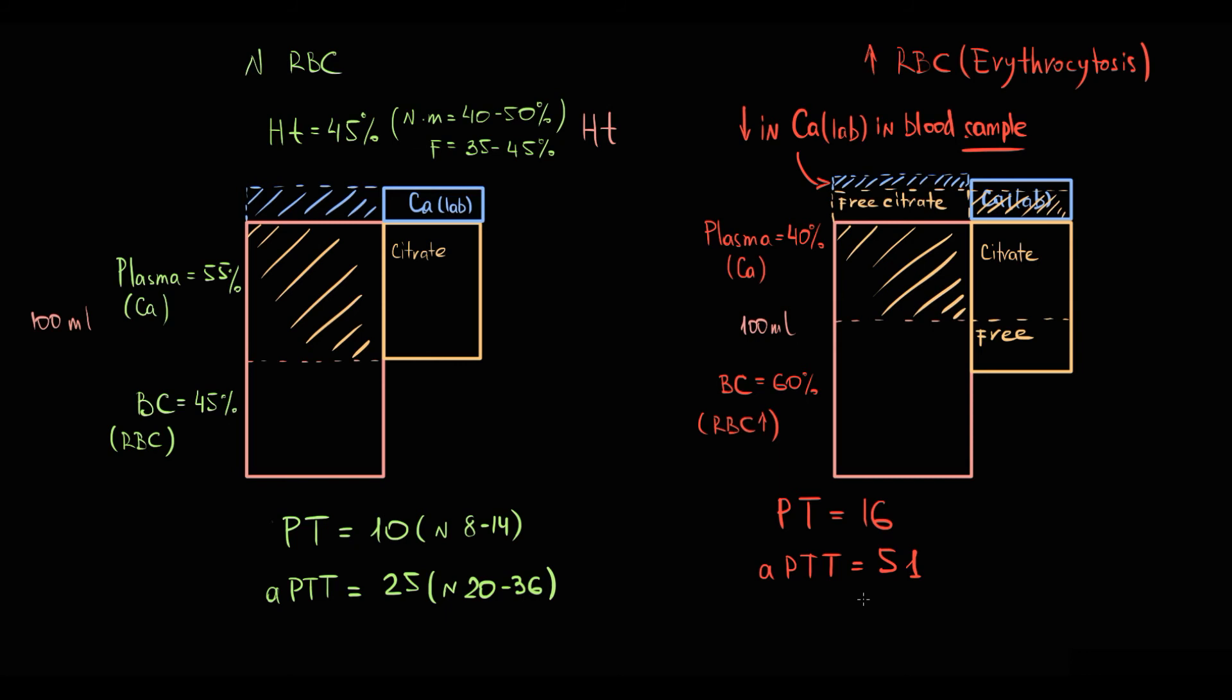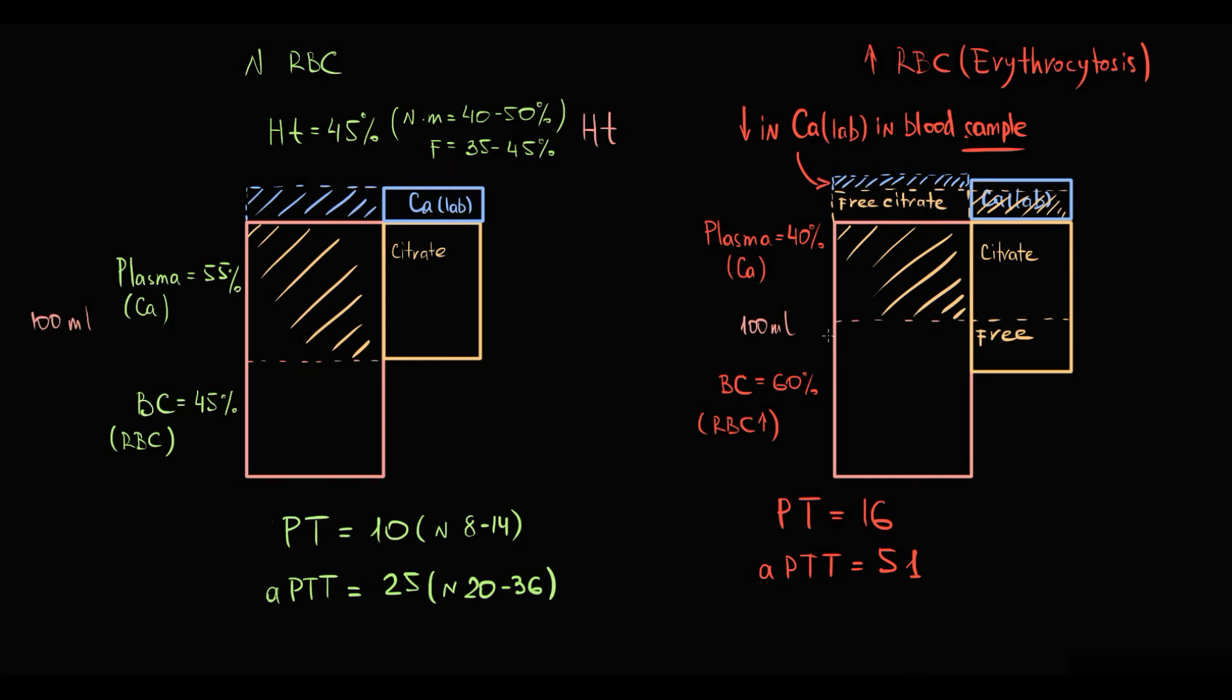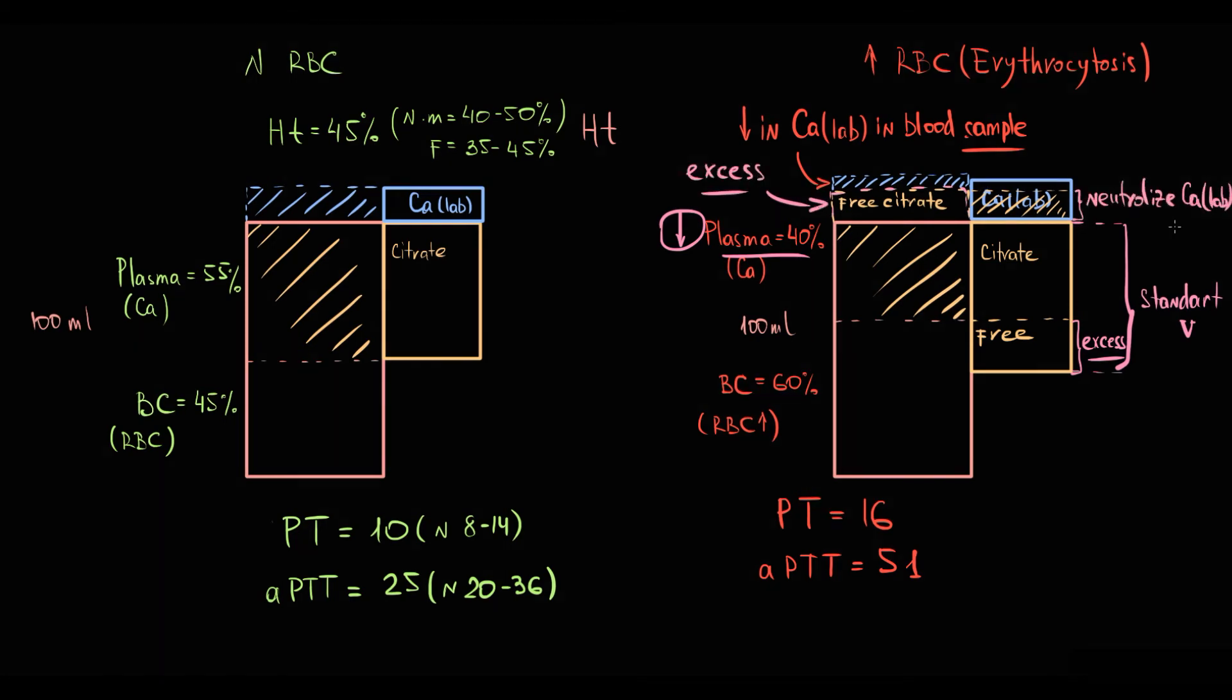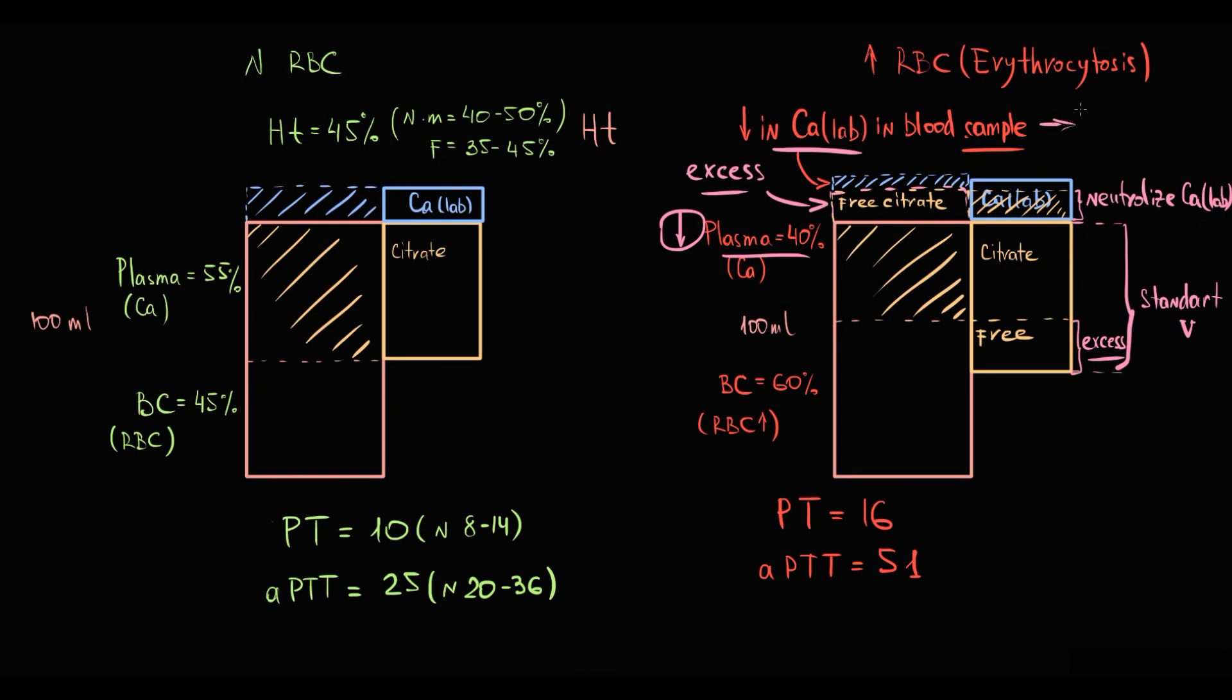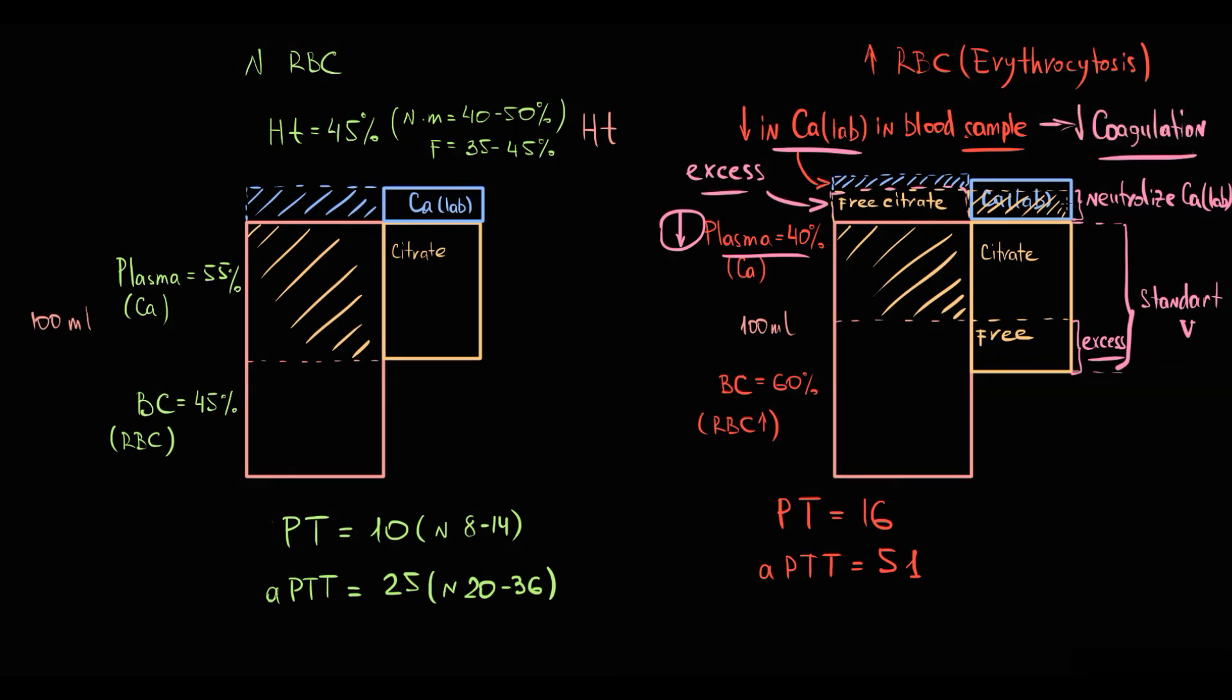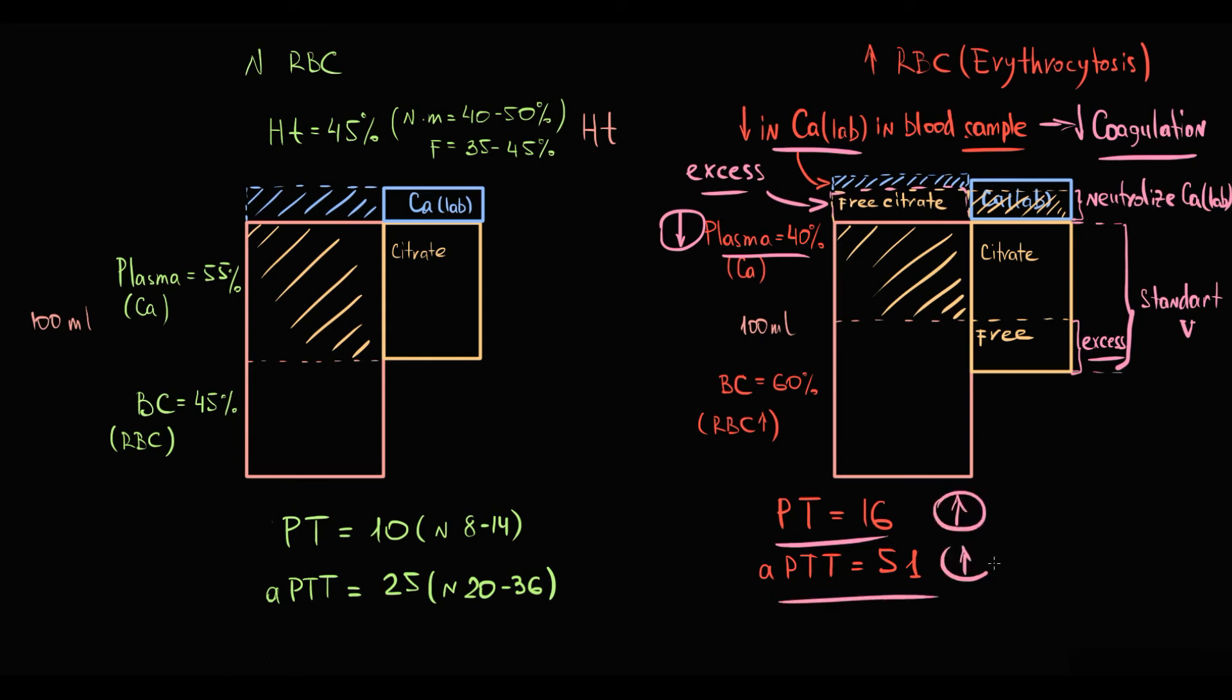So in case of severe erythrocytosis, because plasma volume is decreased, adding standard volume of citrate will cause relative excess of citrate anticoagulant in relation to plasma volume. This excessive citrate will bind calcium that will be added in laboratory, and this will cause decrease in amount of calcium in blood sample. With decreased calcium, coagulation decreases, and this will manifest with artificially prolonged prothrombin time and activated partial thromboplastin time.